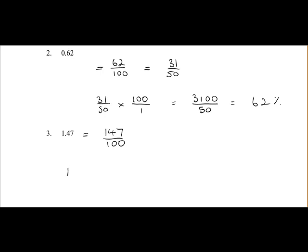it's just 147 over 100 multiplied by 100 over 1. So that gives us 14,700 divided by 100, which is 147%.